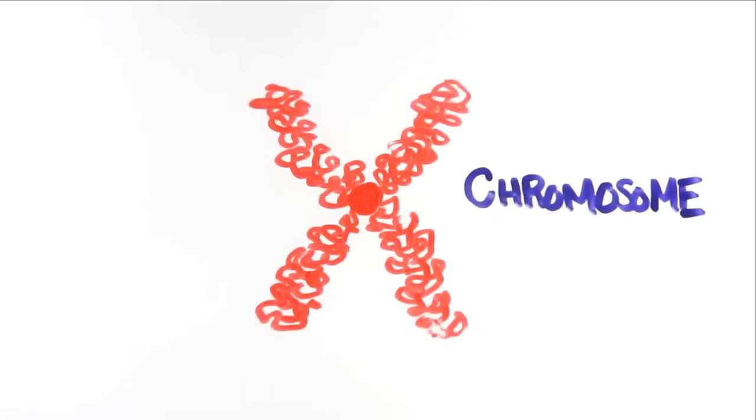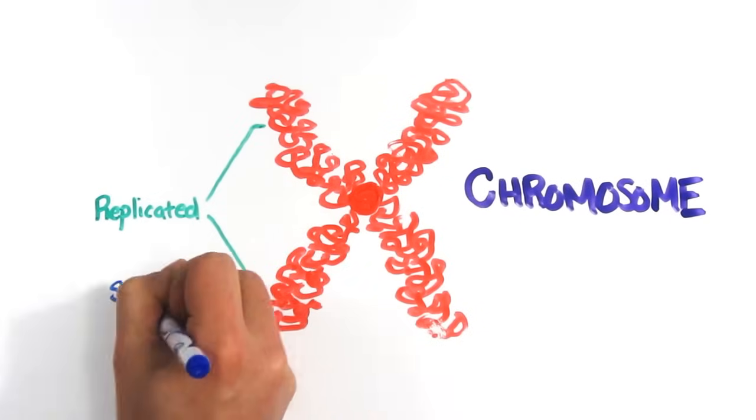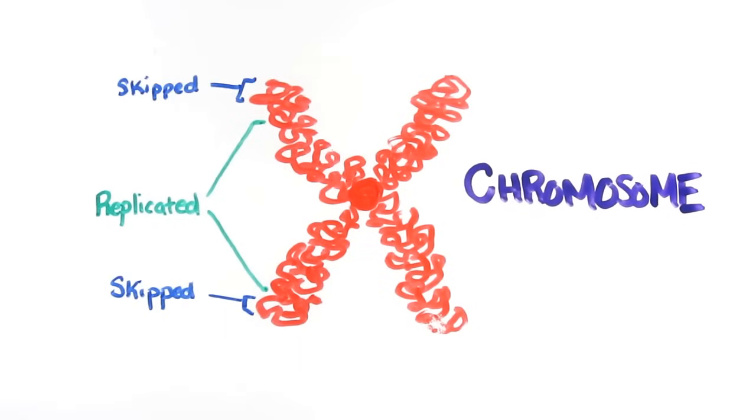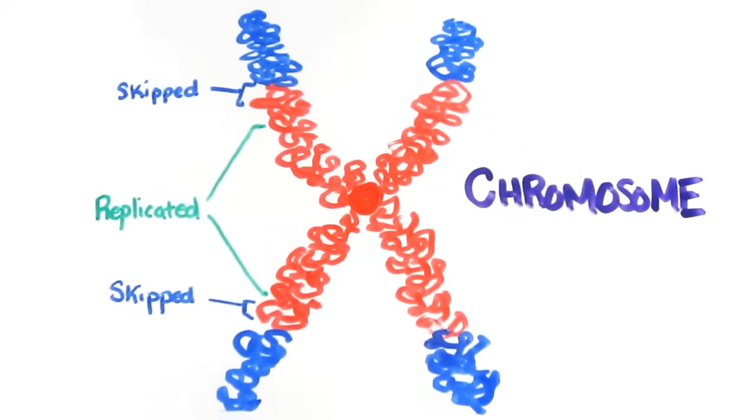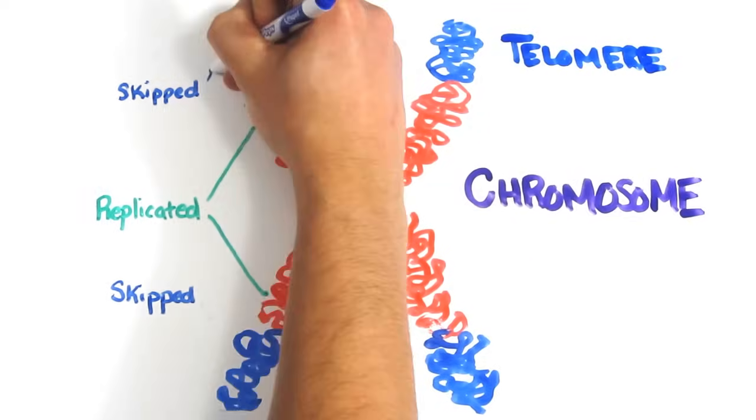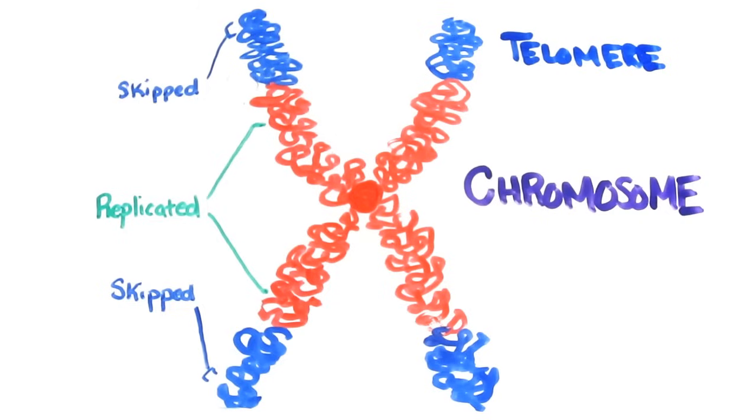The problem is, DNA replication isn't quite perfect and skips over the end of each chromosome. To protect against important DNA information being cut out, we have something called telomeres on the end of chromosomes, which are essentially meaningless repeats of DNA that we can afford to lose.